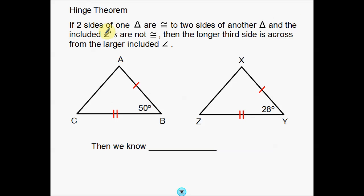And the included angles are not congruent. Included angles simply means the angle that is included in between the two sides we're talking about. So the included angle in the first triangle is going to be this 50 degrees here. Same thing over here on this triangle — the included angle is going to be this 28 degrees.